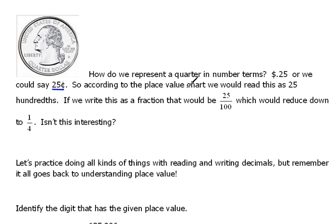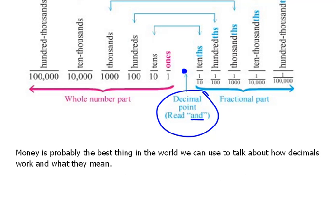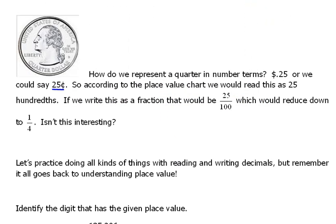Okay, so according to the place value chart, if we were going to read .25 according to our place value chart, then we would say our point is here, and then the 2 and the 5, so we would say 25. Now, this ends in the hundredths position, so that would be 25 hundredths.